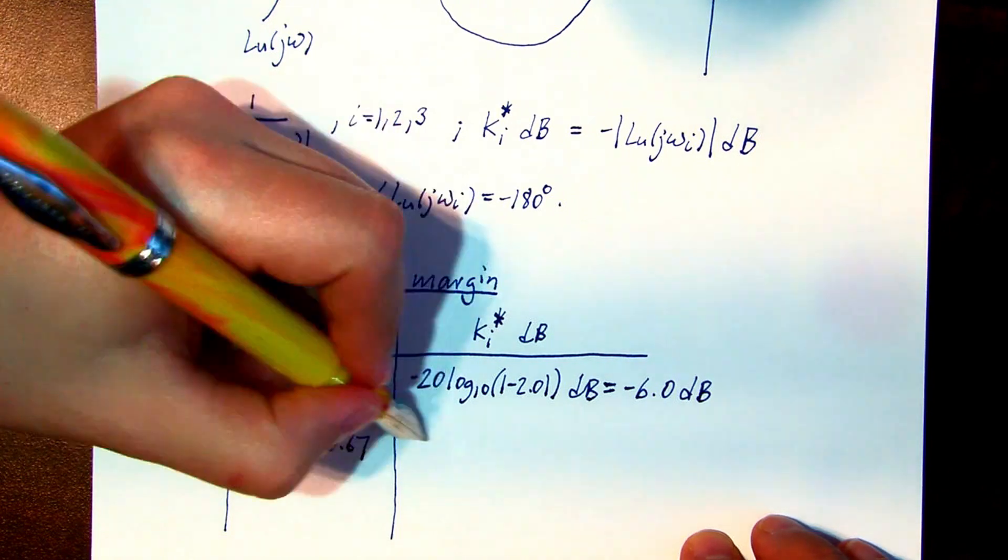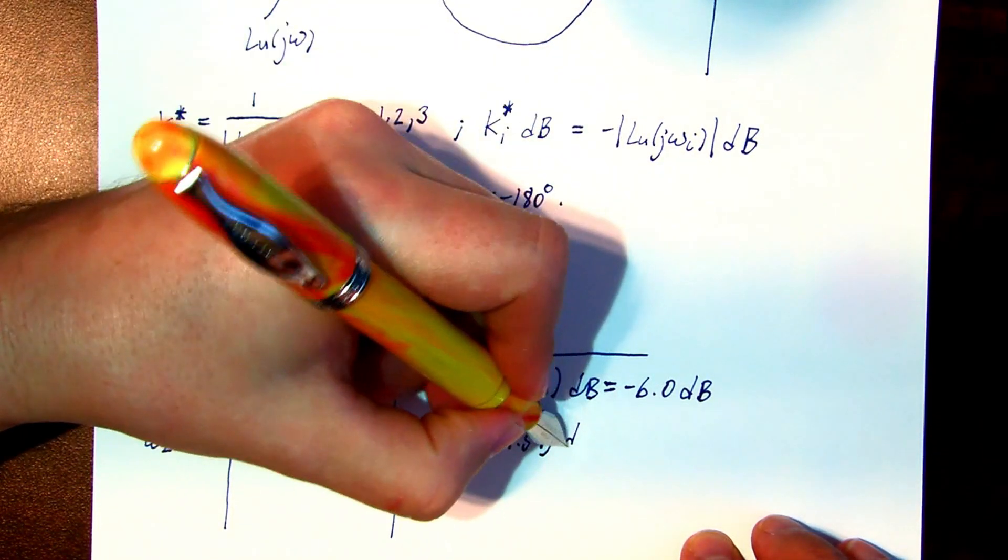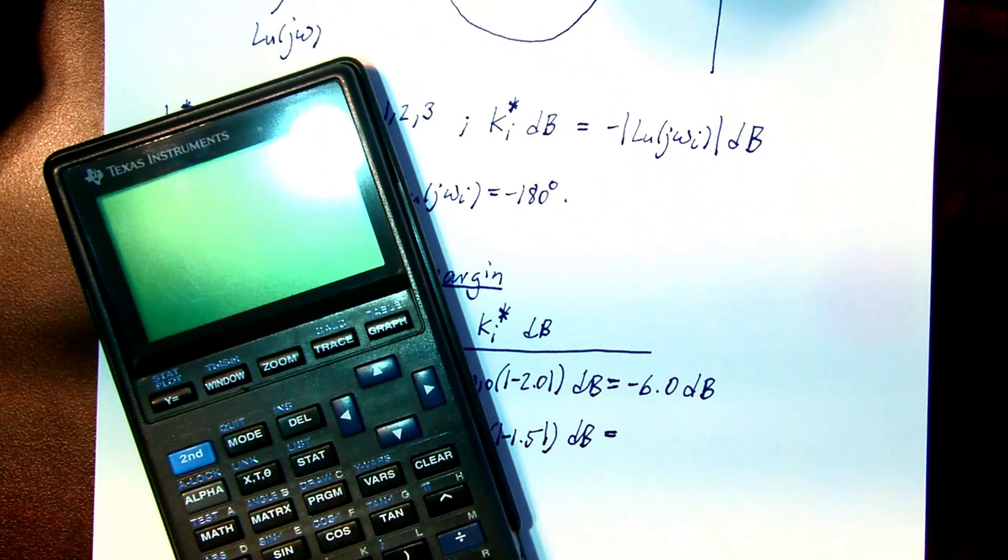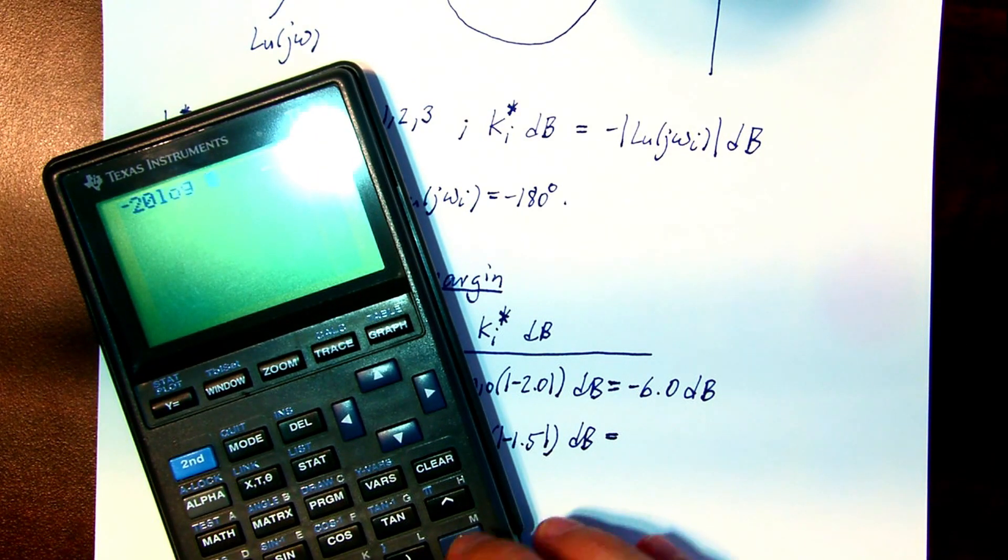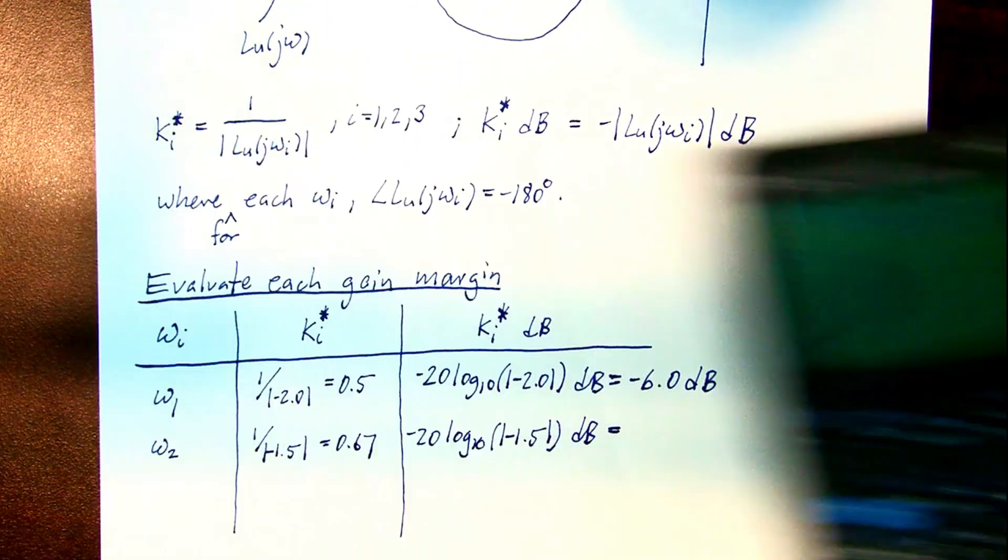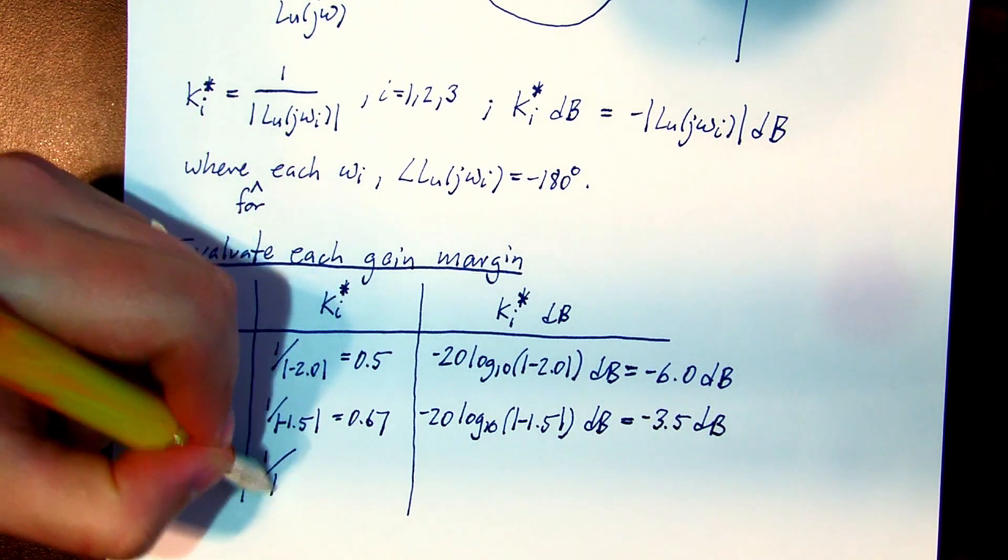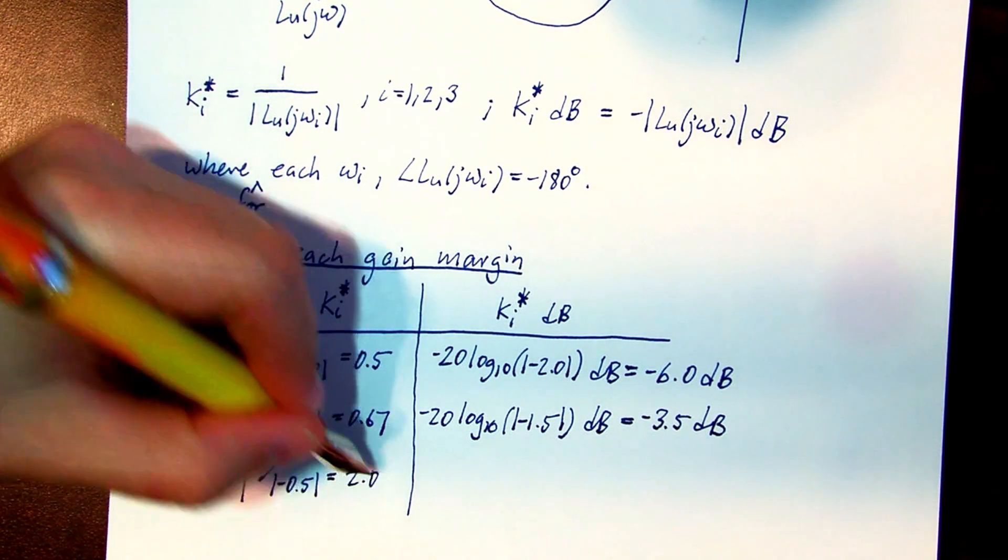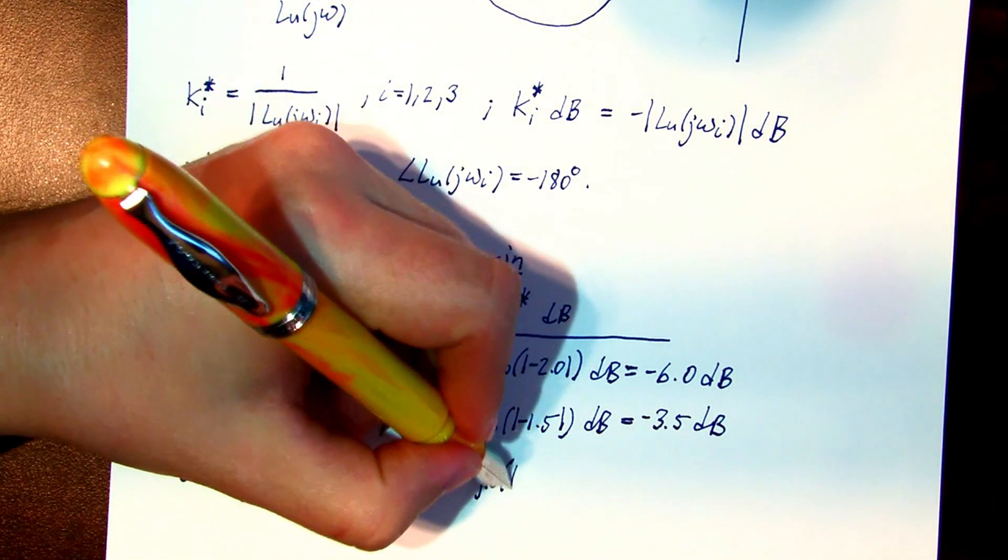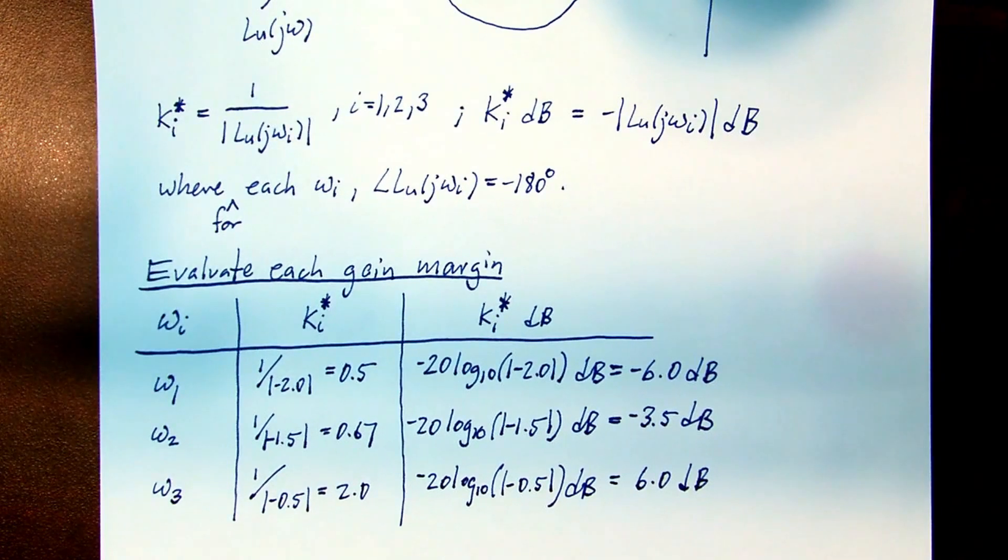At omega 2, it's 1 over 1.5, or 0.67, and in decibels, minus 3.5 dB. And at the highest frequency, 1 over 0.5, or a value of 2, and in decibels, that's 6 dB.